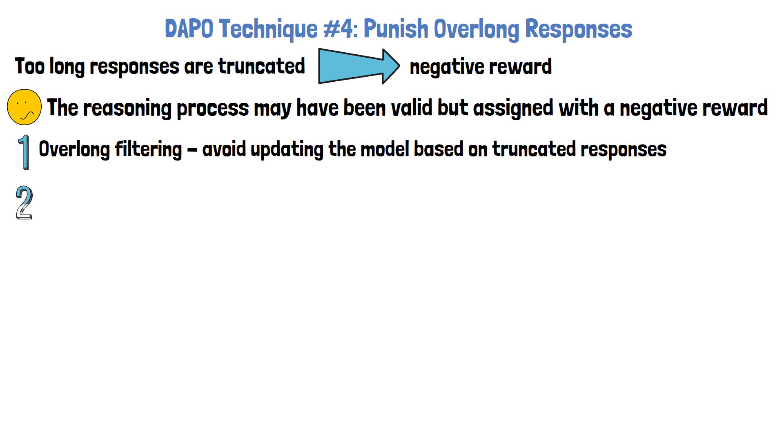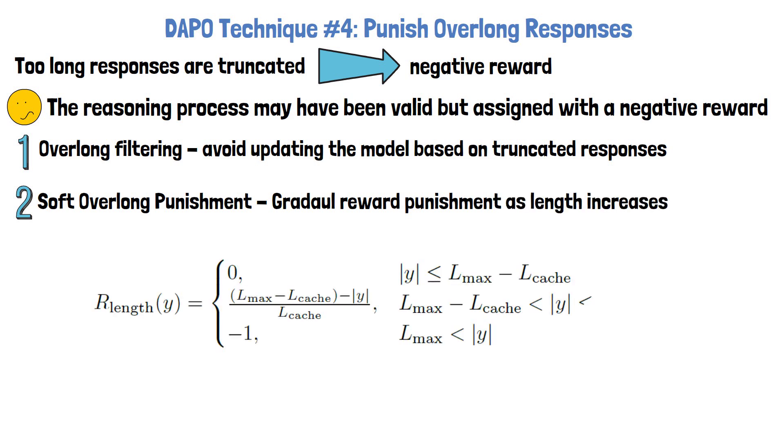The second approach is called soft overlong punishment, which extends the rule-based reward assigned to a response with another reward component. The new reward component is defined by the following equation, gradually signaling the model that the response is too long. The model is only punished when the response exceeds a certain length, starting with a small punishment and increasing as the response grows longer.